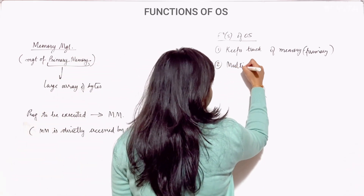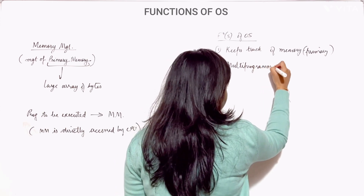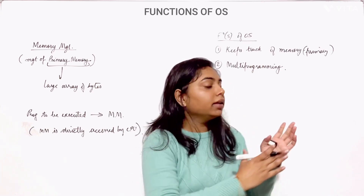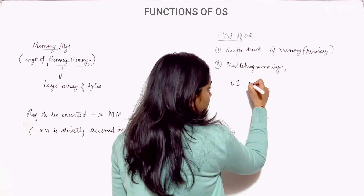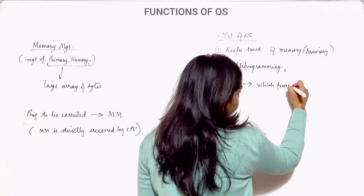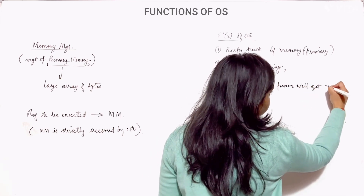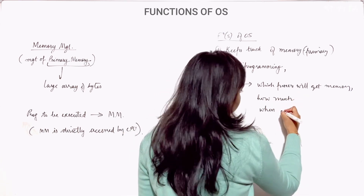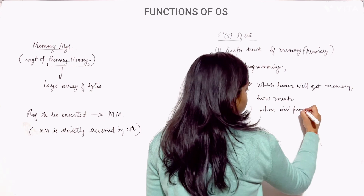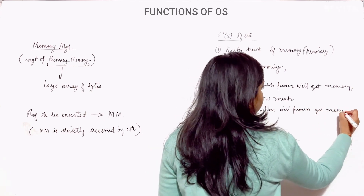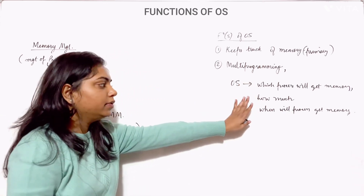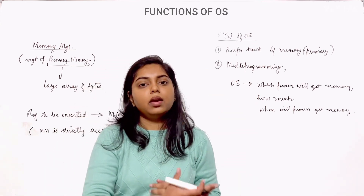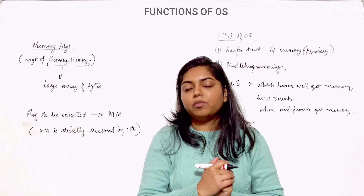The second function relates to multi-programming. When two or more processes are running simultaneously, the operating system will decide which process will get memory, how much memory will be allocated to that process, and when the process will get the memory.